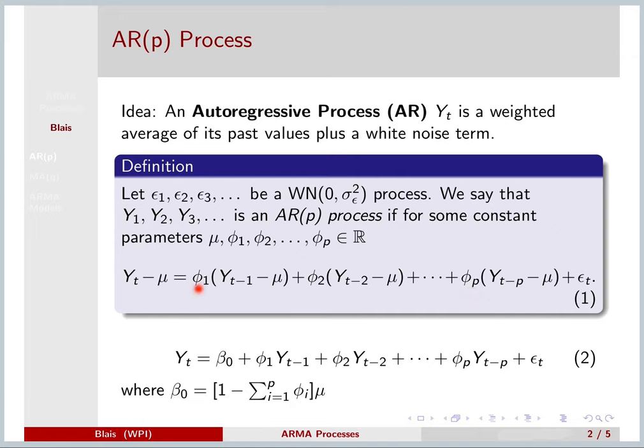Typically, it's most intuitive to think of these φ's as percentages. So if φ₁ was, say, 0.6, you can think of it as Y_t today remembering 60% of itself from yesterday.